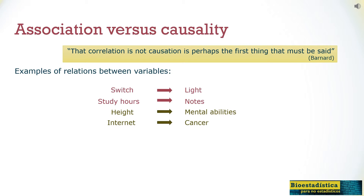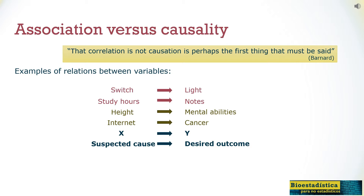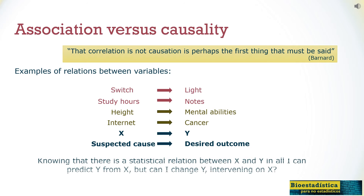In summary, if there is a correlation, you can always use one variable to anticipate the value of the other, and with more precision the more intense your relationship is. But intervening on the first will only change the value of the second if the relation is causal.